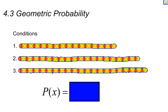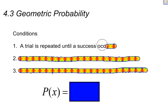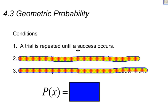Instead of there being a fixed number of trials, with geometric, you have a situation where you repeat the trials until a success occurs. If you're ever faced with a problem that says the probability of making a free throw is 30%, what is the probability that Johnny makes his first free throw on his fifth attempt? That's his first success — the trials are repeated until the first success occurs.